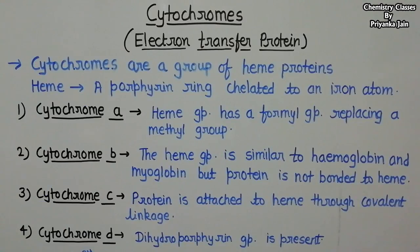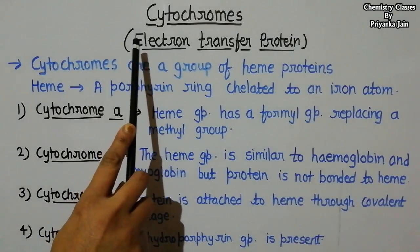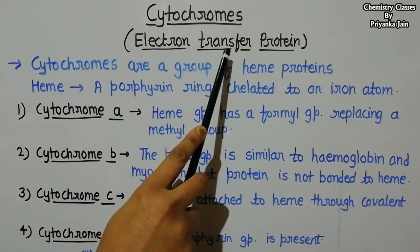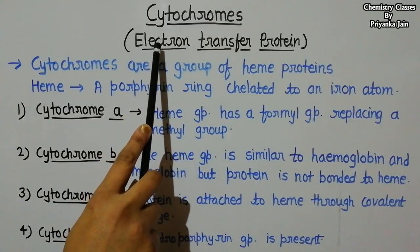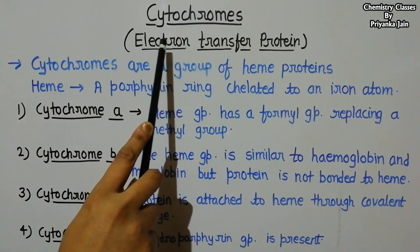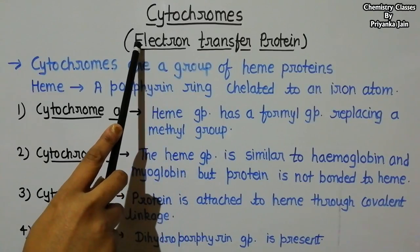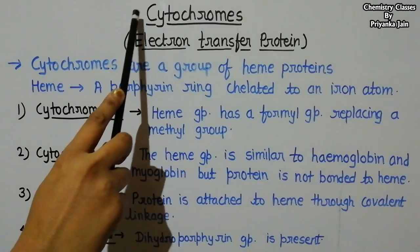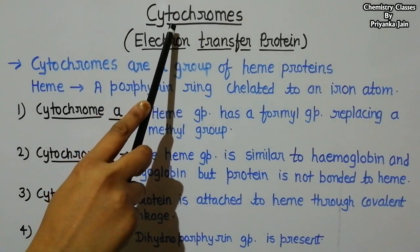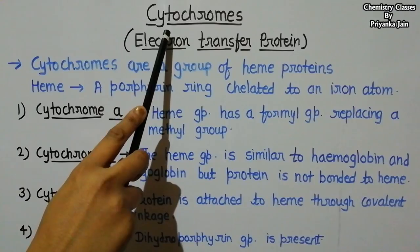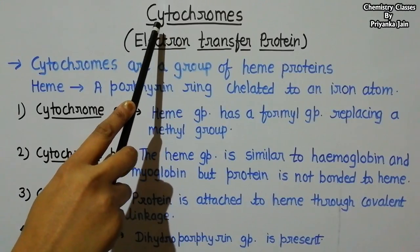Hello students, today I have made a video on bio inorganic chemistry about the structure and activity of the cytochromes. What are cytochromes? Cytochromes are electron transfer proteins — they are metalloproteins. A metalloprotein is any protein that is attached to a metal. In this specific case of cytochrome, it is an iron-containing protein, or we can say it is a heme protein.